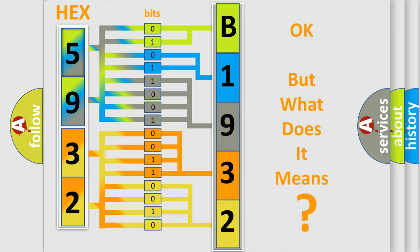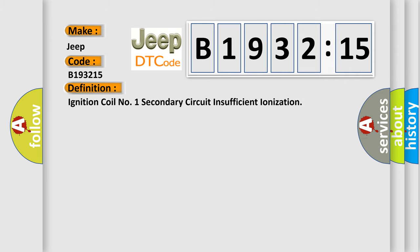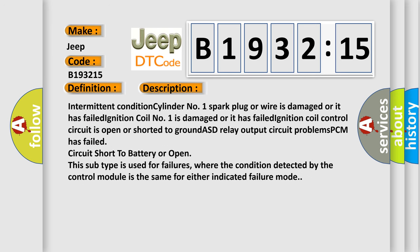The number itself does not make sense to us if we cannot assign information about what it actually expresses. So, what does the diagnostic trouble code B193215 interpret specifically? Jeep car manufacturers. The basic definition is: ignition coil number one secondary circuit insufficient ionization. Intermittent condition — cylinder number one spark plug or wire is damaged or has failed. Ignition coil number one is damaged or has failed. Ignition coil control circuit is open or shorted to ground. ASD relay output circuit problems. PCM has failed — circuit short to battery or open. This subtype is used for failures where the condition detected by the control module is the same for either indicated failure mode.